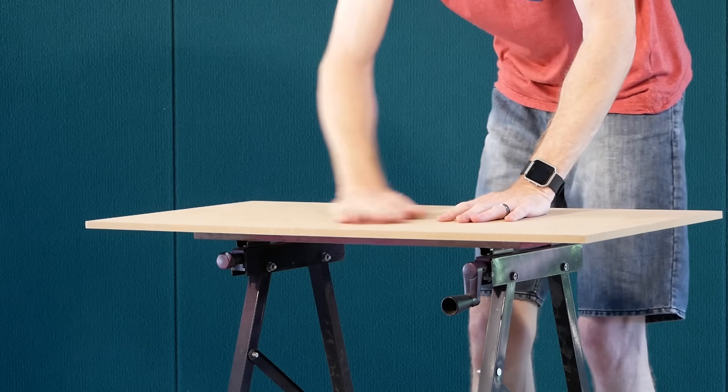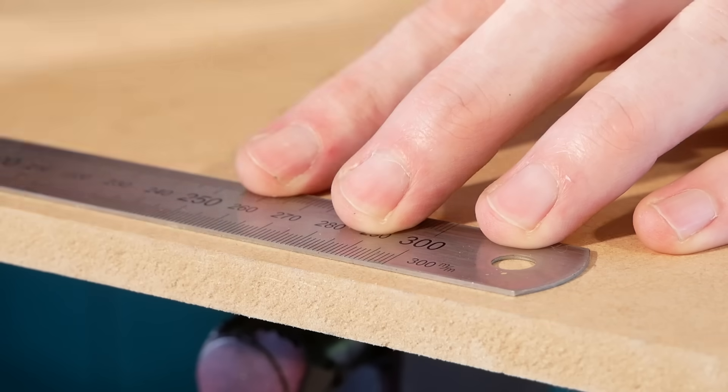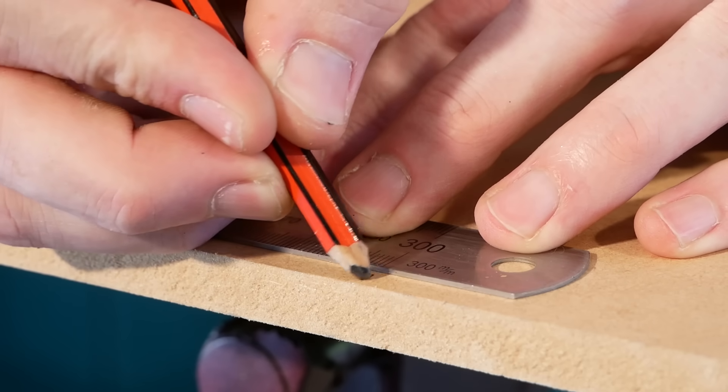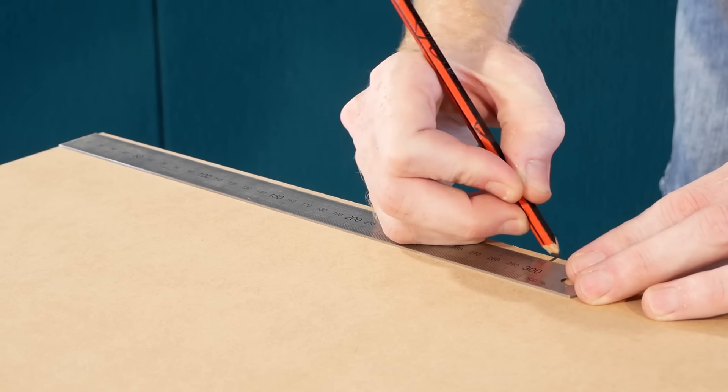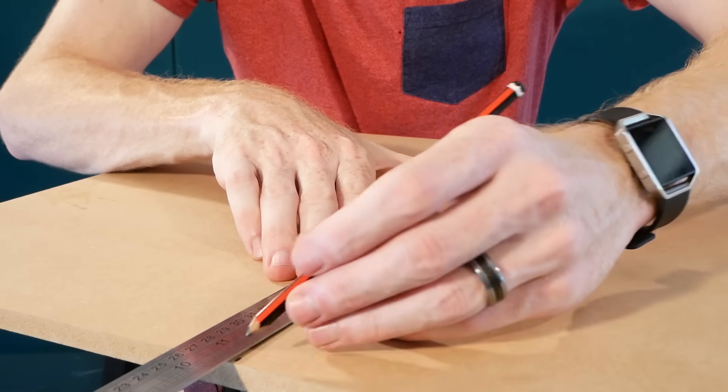To start off with, we'll need a nice smooth and flat board to act as our tabletop for the foam cutter. In my case I made mine 30cm wide by 60cm long, which should be more than enough for what I plan to use it for.